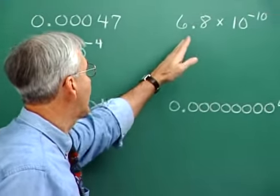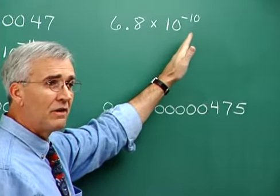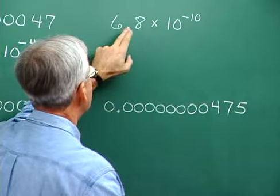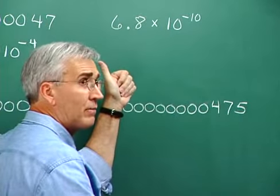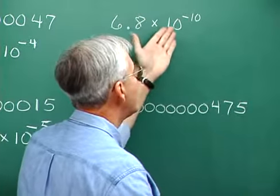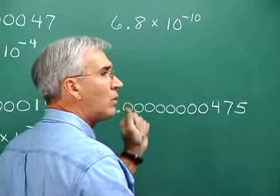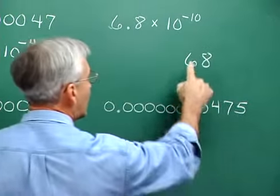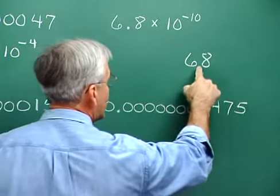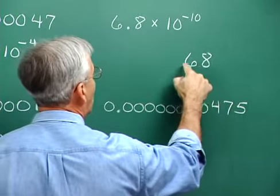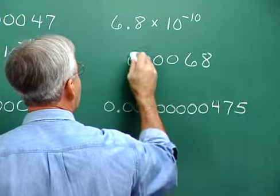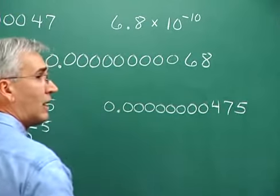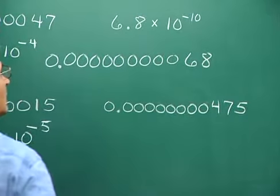It's important to be able to work both ways. If we start with 6.8 times ten to the negative ten, a negative exponent on ten implies it's a really small number. We're dividing by ten to the tenth, so we move the decimal point ten places to the left. Starting with the digits 6 and 8, we go ten to the left: one, two, three, four, five, six, seven, eight, nine, ten. One digit to the left of that decimal gives us the number in expanded form.